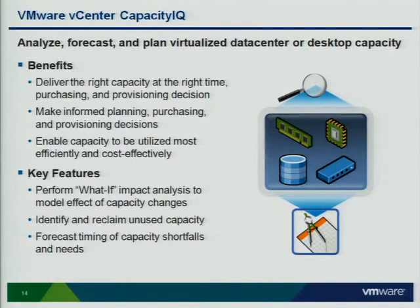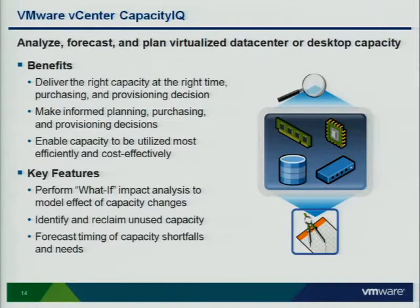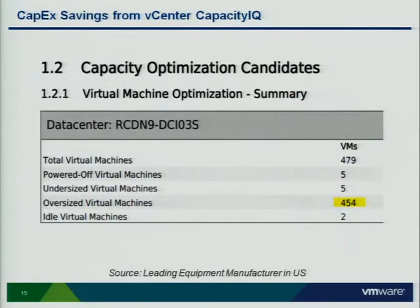What Capacity IQ does is pull data from the vCenter database on an ongoing basis — once the appliance is turned on, it continuously pulls data and does trending and forecasting based on that. We already have customers — the product was launched last year — several who have gone through POCs and are very happy with it. One customer's report after their POC showed the optimization opportunities in their environment.